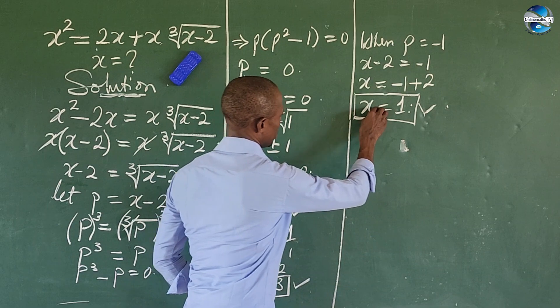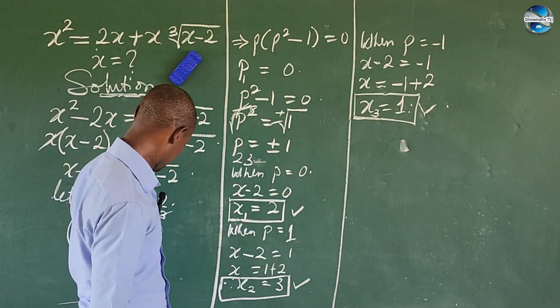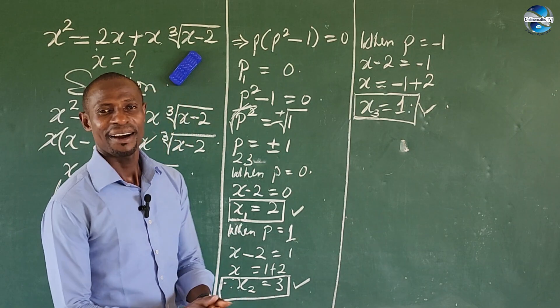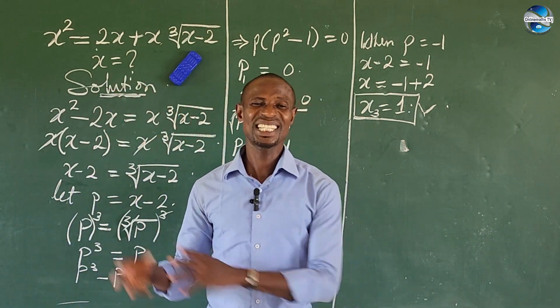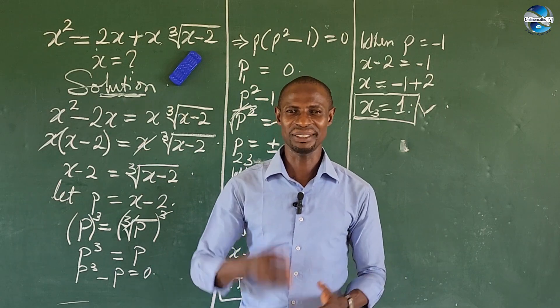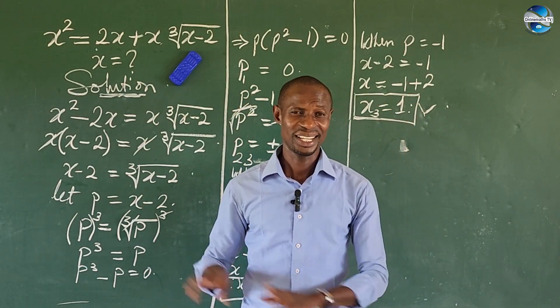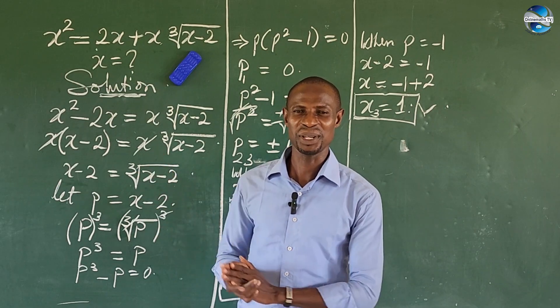In all, we have our x₁ = 2, x₂ = 3, x₃ = 1. This might be the end to this simple radical equation. It's not all the time we rack our head to solve mathematics. At least this one, even in your sleep, you should be able to solve this.